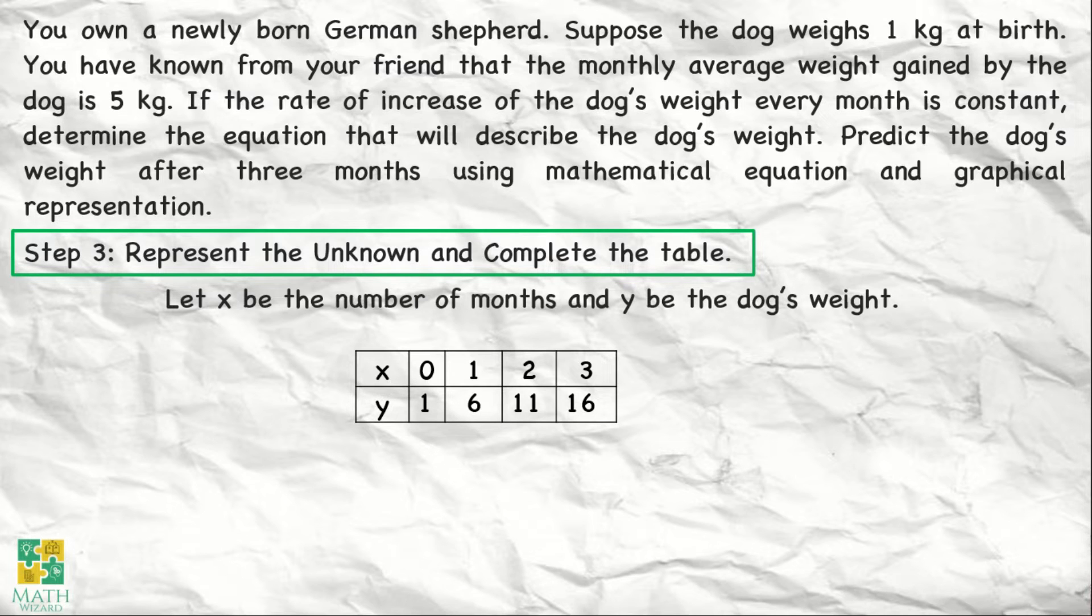Ibig sabihin, yung value ng y nakadepende sa number of months. Based ating problem, ang sabi doon, at birth, so 0 yung x, ang weight ng dog ay 1. So when x is 0, y is 1.